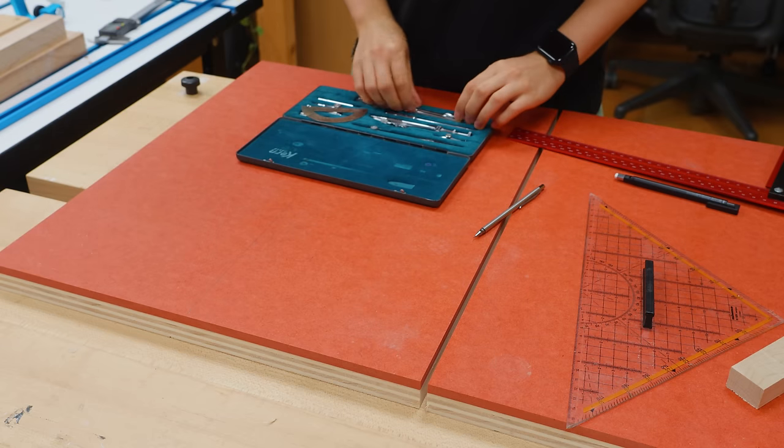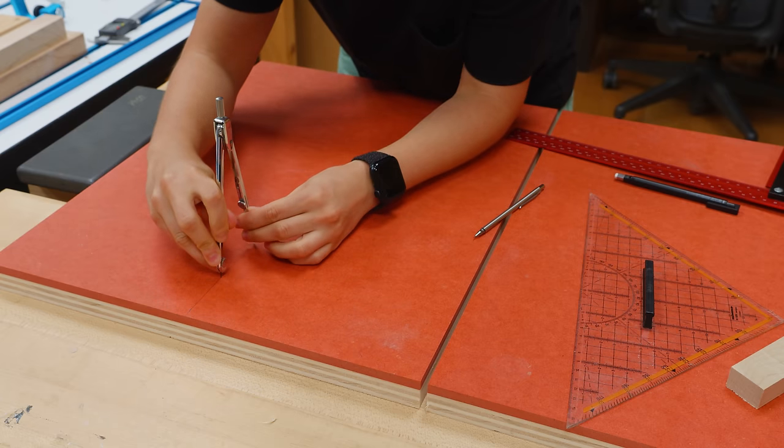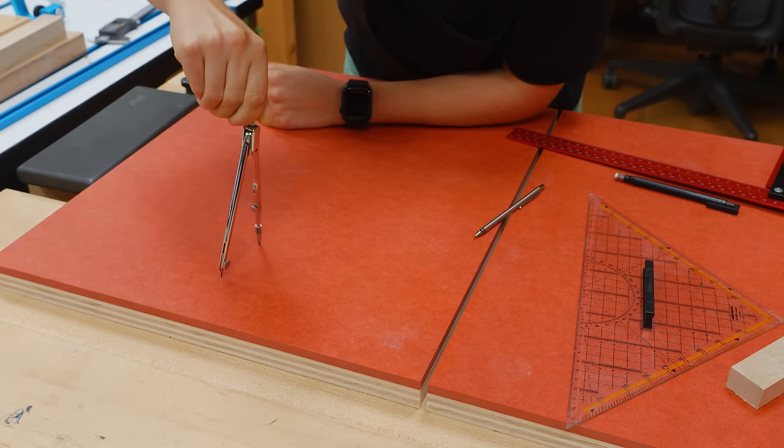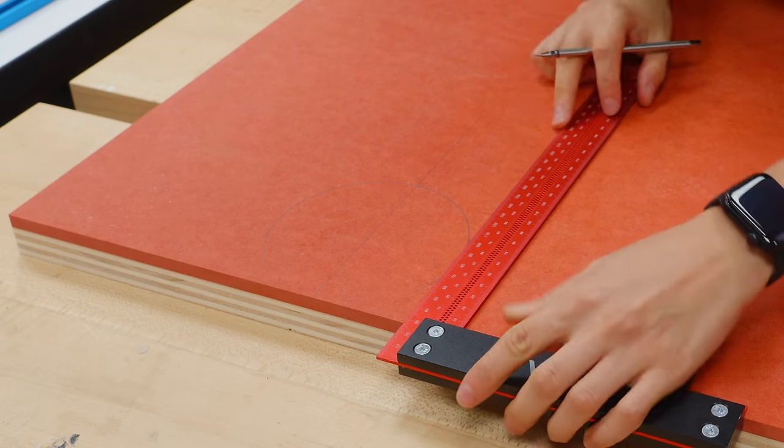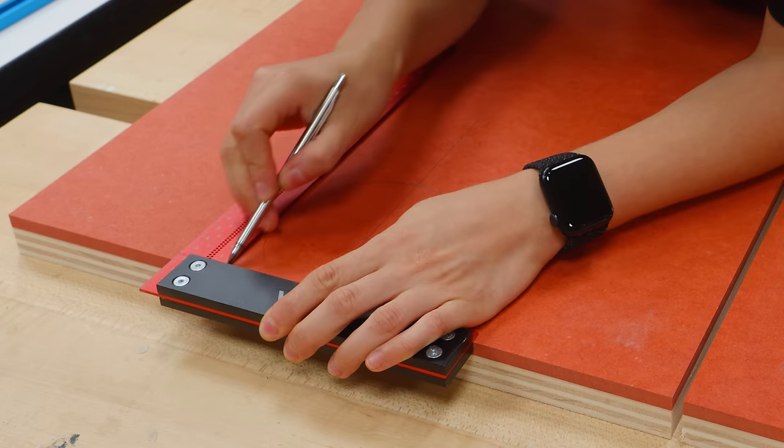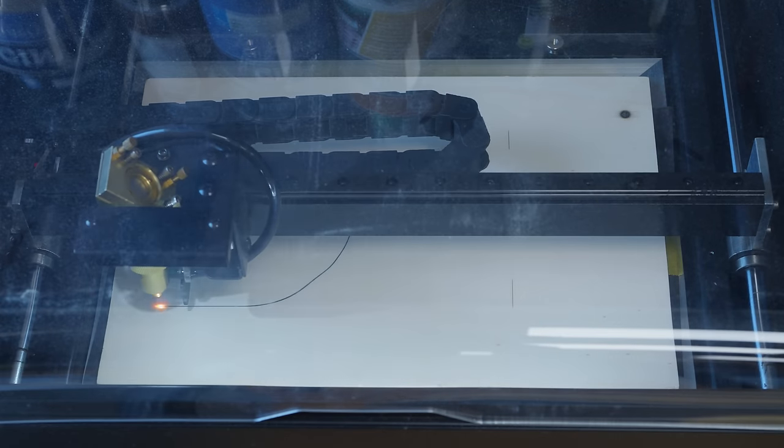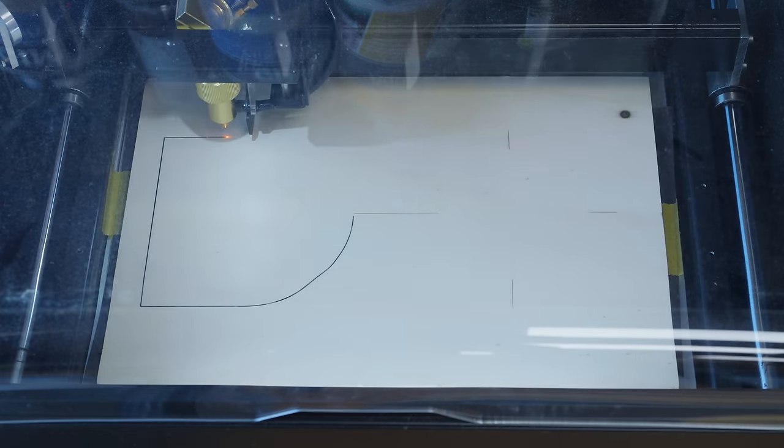I used this old compass I got from my mom—yes mom, it's still here with me, I haven't lost it—and traced half a circle that I'll cut out to fit around the drill press column. I drew the cut out shape and a circle representing the replaceable insert on the computer to cut with the laser as a template.